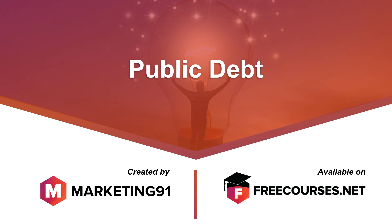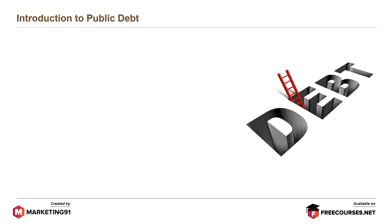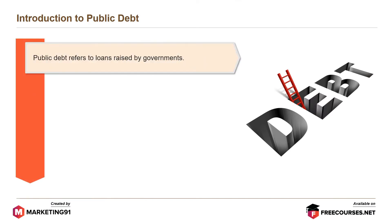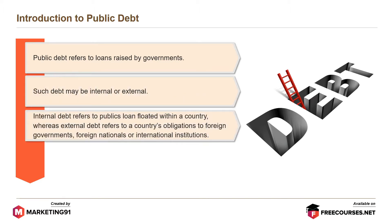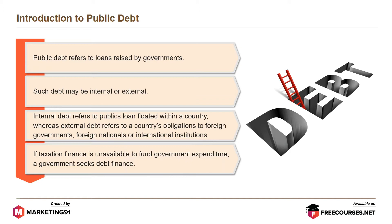Hello and welcome to Marketing91.com. Let's start with an introduction to public debt. Public debt refers to loans raised by governments. Such debt may be internal or external. Internal debt refers to public loans floated within a country, whereas external debt refers to a country's obligations to foreign governments, foreign nationals, or international institutions. If taxation finance is unavailable to fund government expenditure, a government seeks debt finance.